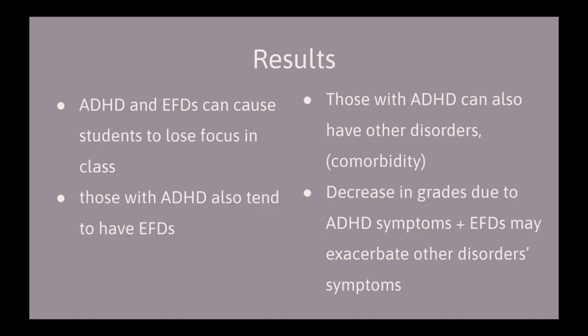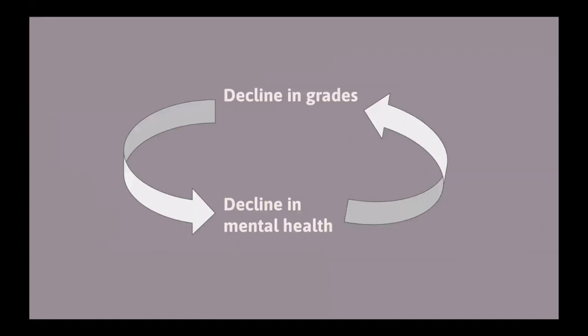Those with ADHD can have other disorders, like anxiety and depression. These are known as comorbid disorders. A decline in academics due to symptoms of ADHD and executive functioning deficits could lead to stress, which could exacerbate the symptoms of certain comorbid disorders, such as depression and anxiety, which could lead to a further decline in grades. This creates a feedback loop of lower grades, leading to lower mental health, leading to lower grades.